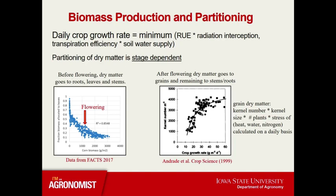Around here is flowering. Prior to flowering, most of the biomass is being allocated to the leaves. After flowering, the dry matter primarily goes to the grains and then the remaining to the roots and stems. We see this when we plot kernel number per meter squared against crop growth rate — as crop growth rate increases, kernel number per meter squared increases as well. Additionally, the model calculates grain dry matter on a daily basis as a product of kernel number, kernel size, and the number of plants per meter squared, also impacted by stresses such as heat, water, and nitrogen.